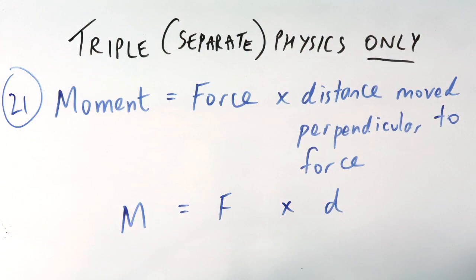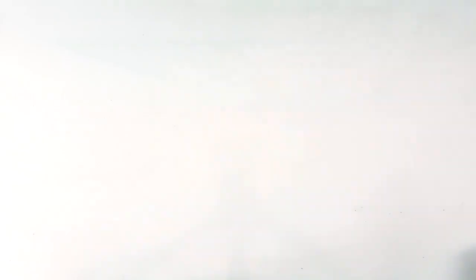Twenty-one, moment equals force times distance moved perpendicular to the force. Triple science.